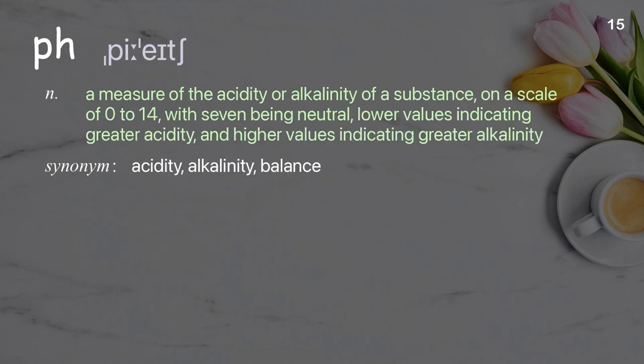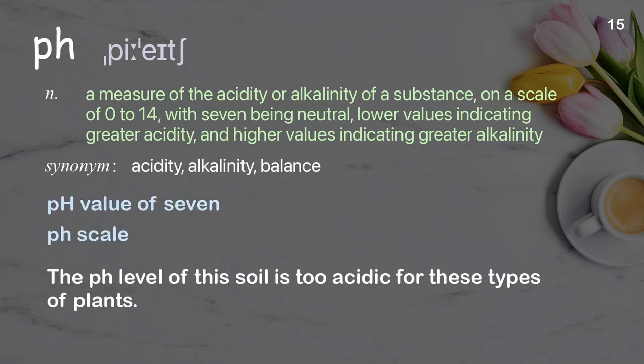pH: a measure of the acidity or alkalinity of a substance, on a scale of 0 to 14, with 7 being neutral, lower values indicating greater acidity, and higher values indicating greater alkalinity. The pH level of this soil is too acidic for these types of plants.